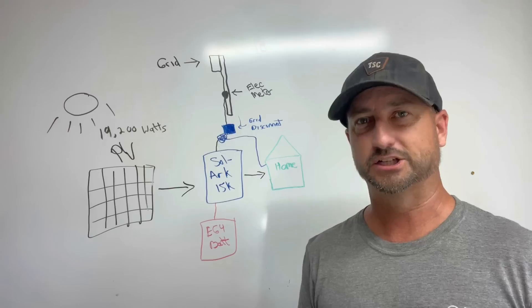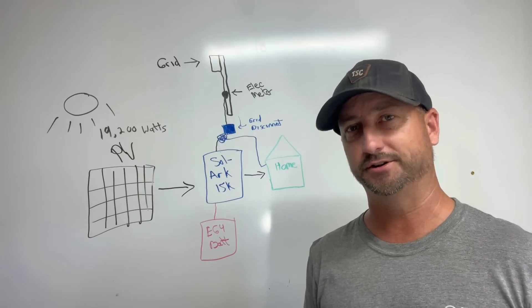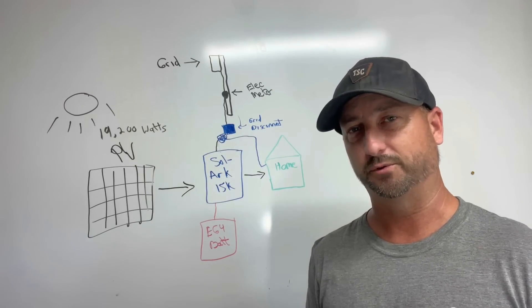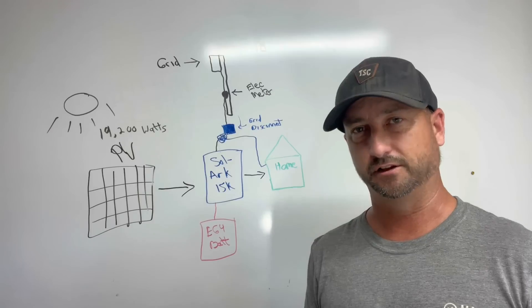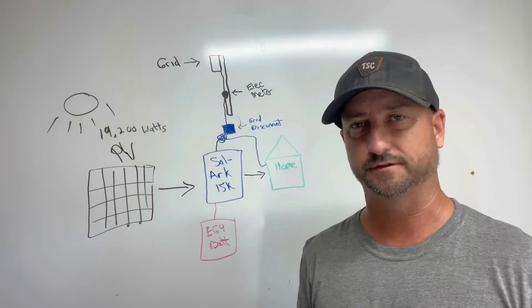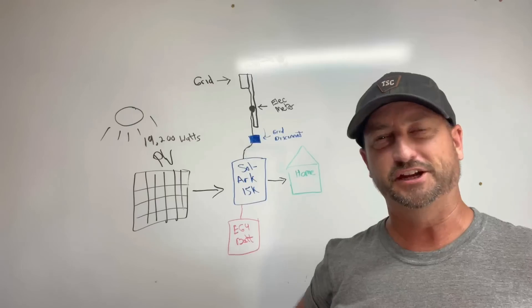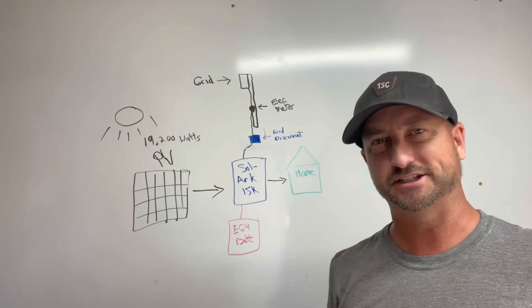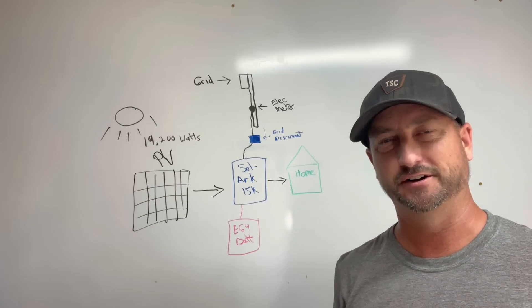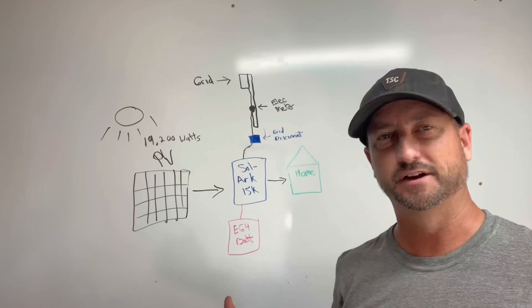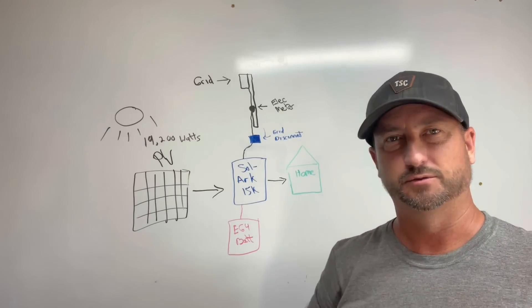So if you're doing a system from scratch right now when you're doing a ground mount racking style system, definitely look into those. And I'll leave a link in the description of this video to all the materials I'm talking about: the Solark 15k, the EG4 batteries, the ballast style racks I'm talking about here, and a link to the PDF that you can download for free with all the links to where I purchased everything for my installation.